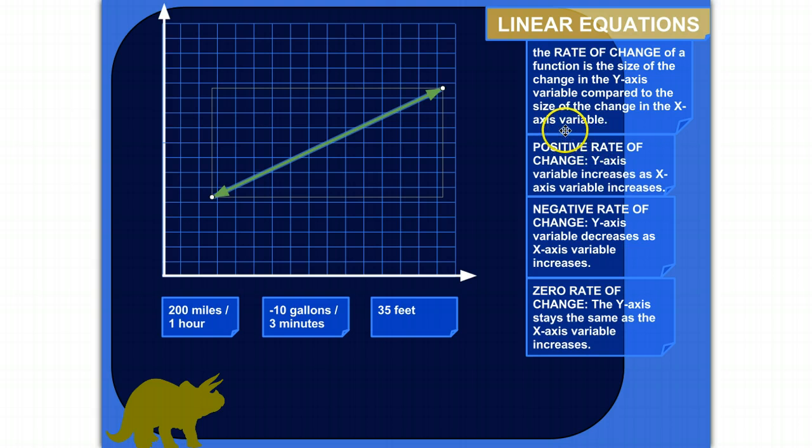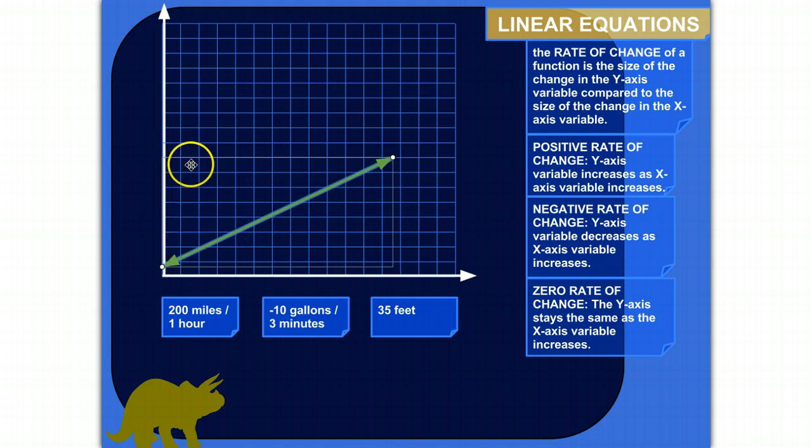So there's a positive rate of change. That means the y-axis variable is increasing as the x-axis increases. So it would be something like this. The y's here are getting bigger and bigger and bigger, and the x's are getting bigger and bigger and bigger at the same time.